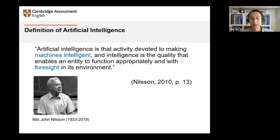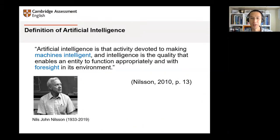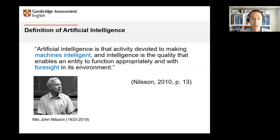First of all, we need to define what AI is. Nils John Nelson was an American computer scientist and one of the founding researchers in artificial intelligence. He defines AI as an activity devoted to making machines intelligent, and intelligence is a quality that enables an entity to function properly and with foresight in its environment. More recently, machine learning scientists have further elaborated this idea, regarding it as the science of training systems to learn, reason, and act from data.